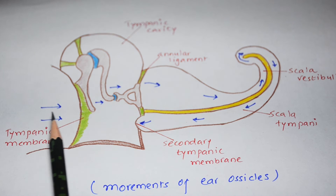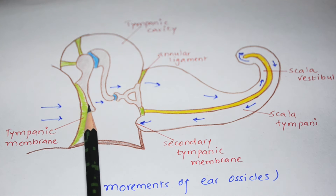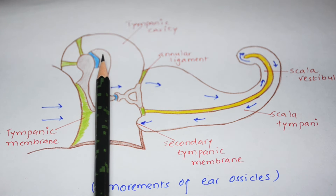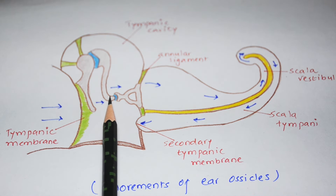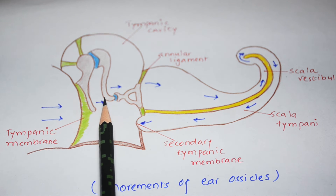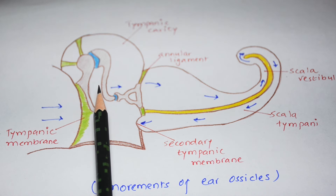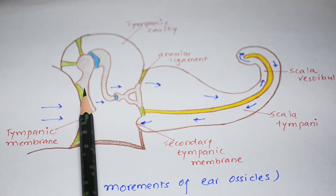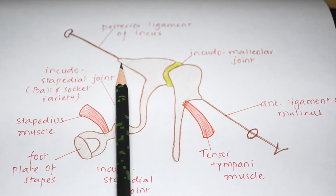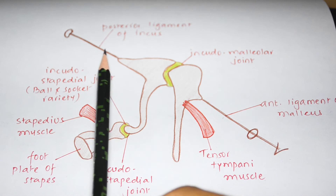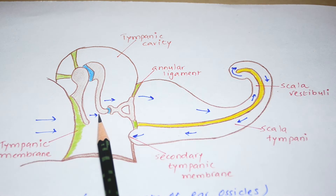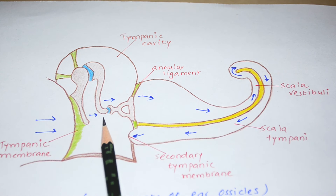Now let's understand the mechanism of movement of ear ossicles. When a sound wave moves the tympanic membrane, the handle of malleus also moves medially. At the same time the incudomalleolar joint gets locked, so it doesn't move, and along with the malleus the long process of the incus also moves. This movement is a rotatory movement, with the axis of rotation extending from the anterior process of malleus to the short process of incus.